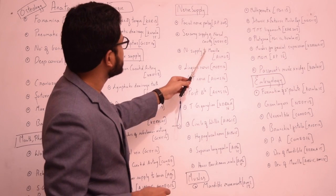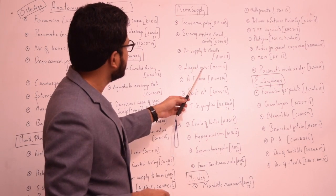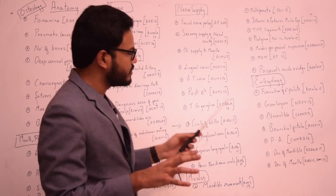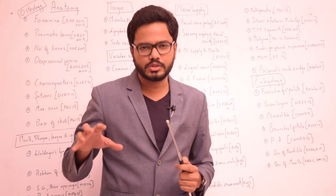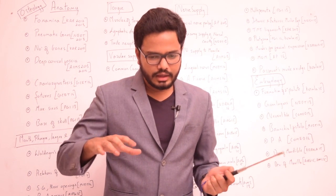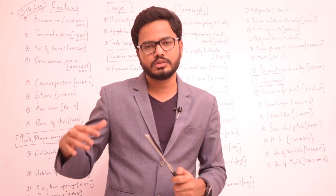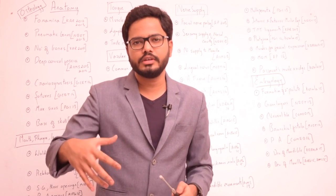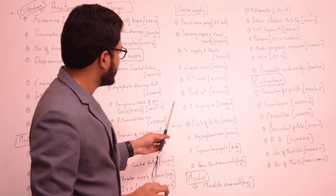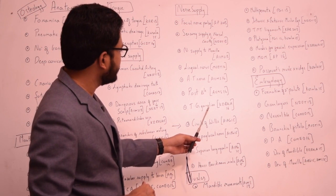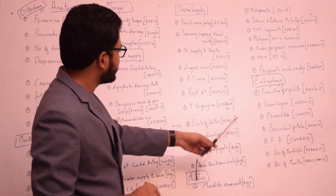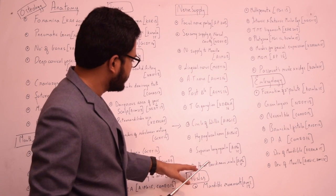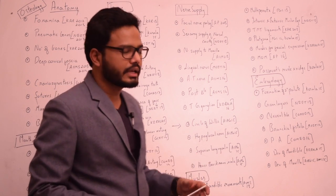We also have questions from nerve supply to the maxilla, lingual nerve, auriculo-temporal nerve, and mainly questions from the posterior triangle — questions related to the components of the triangle, various innervations, etc. And also questions from the trigeminal ganglion and several other topics like the hypoglossal nerve, superior laryngeal nerve, and the House-Brackmann scale.